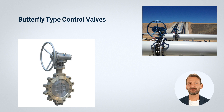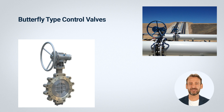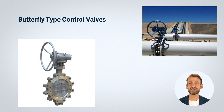Function: butterfly valves are primarily used to regulate flow or pressure in large-diameter piping systems. They can be used for on-off or throttling service and are typically designed for manual or automated operation. Applications: butterfly valves are commonly used in water and wastewater treatment, HVAC systems, chemical processing, and other applications requiring efficient, cost-effective flow control. They are particularly well suited for rapid opening or closing, such as emergency shutoff or system isolation.